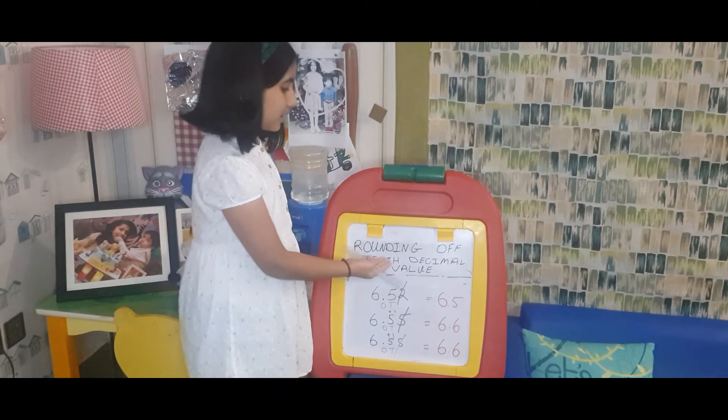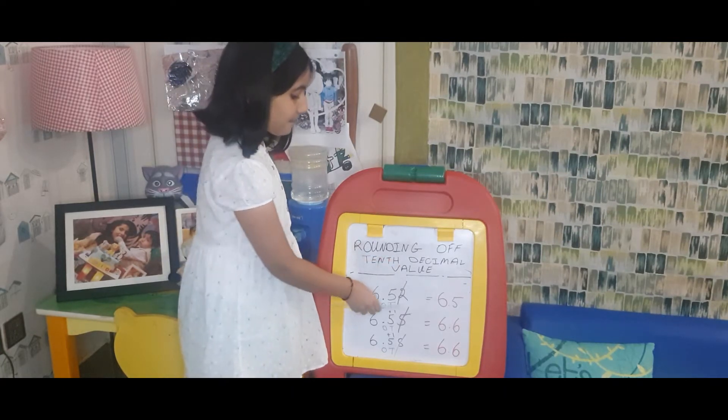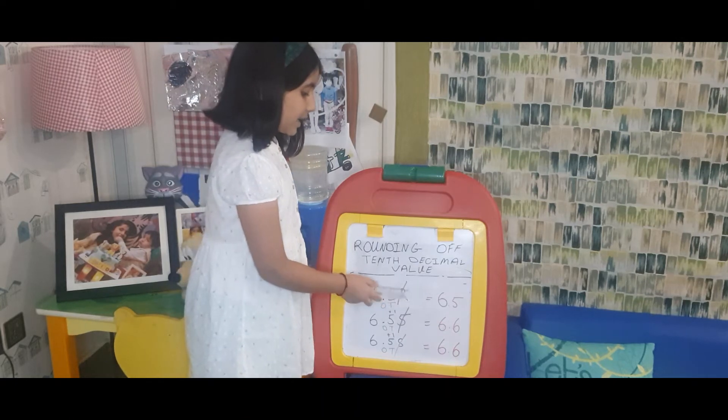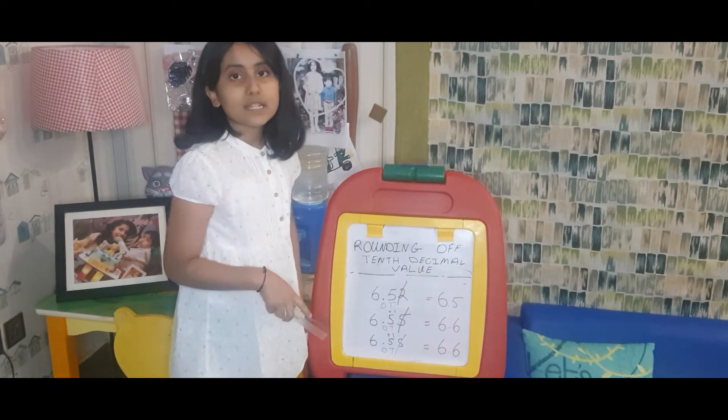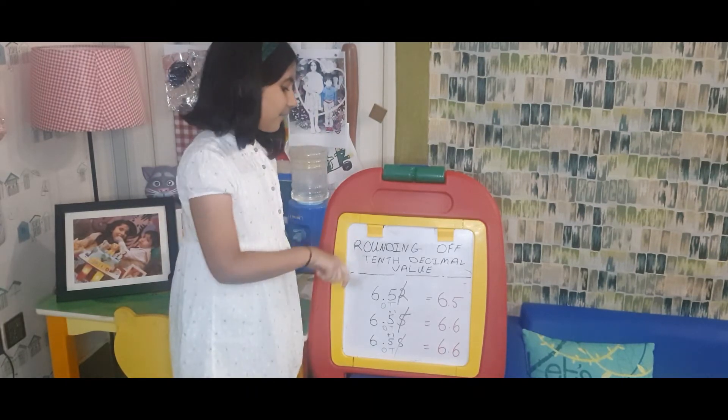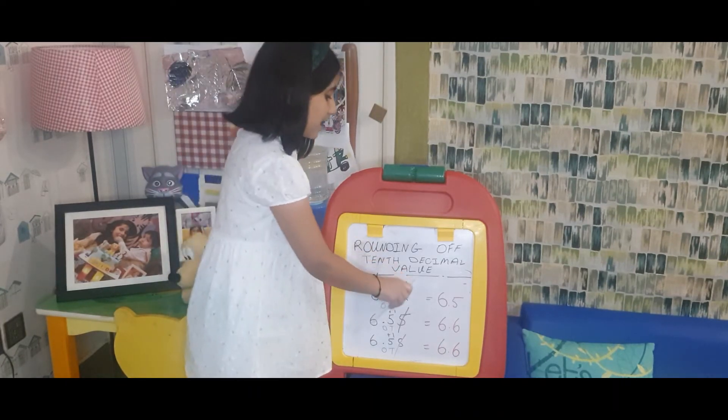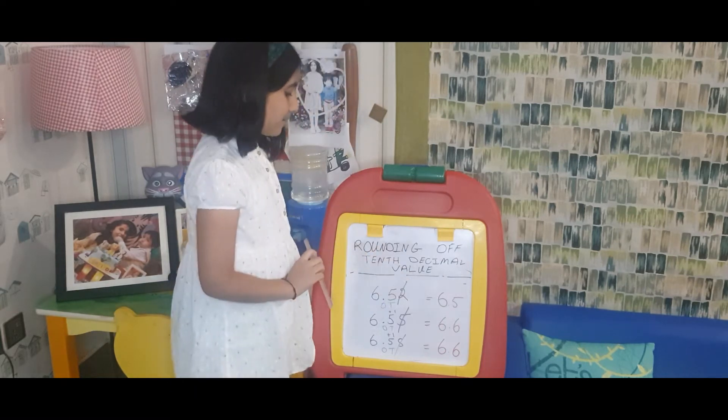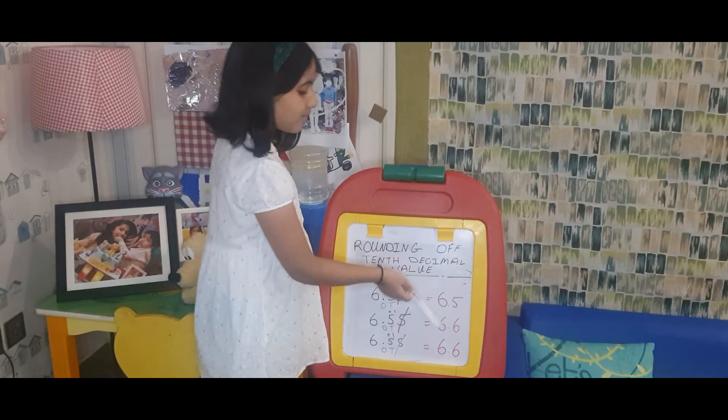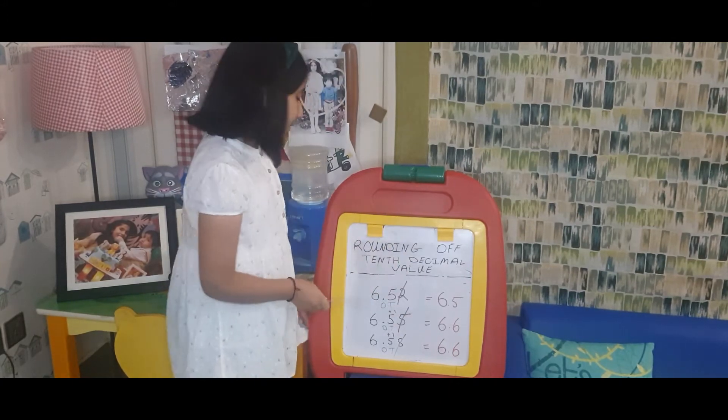The digit left is 2. Now we will see if 2 is equal to 5, more than 5, or less than 5. It's less than 5, so we will delete this digit and nothing will happen to the 5. The answer will be 6.5.